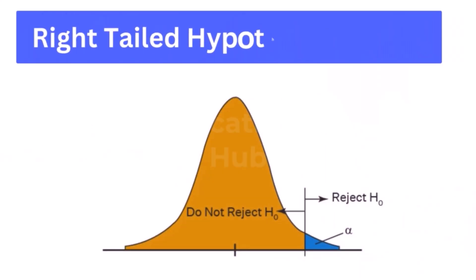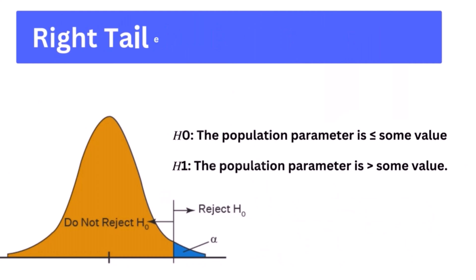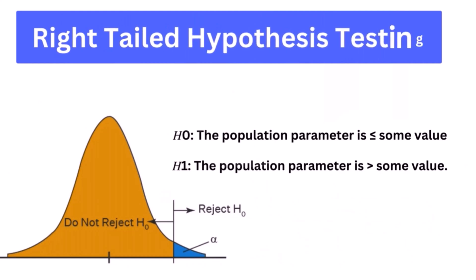Right-tailed hypothesis testing: The right-tailed test is also known as the upper-tailed test. This test is used to check whether the population parameter is greater than some value. The null and alternative hypotheses for this test are: H0 — the population parameter is less than or equal to some value; H1 — the population parameter is greater than some value. If the test statistic has a greater value than the critical value, then the null hypothesis is rejected.